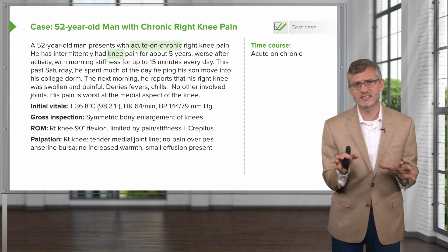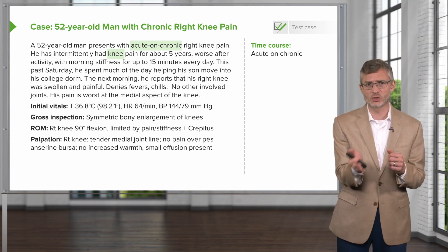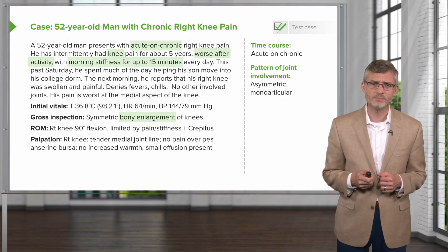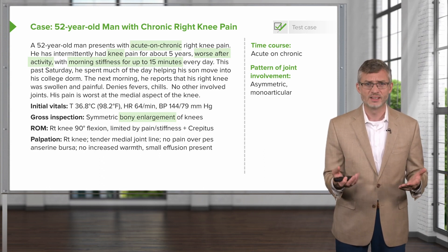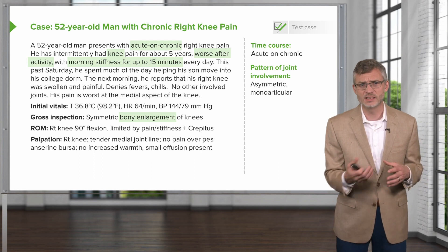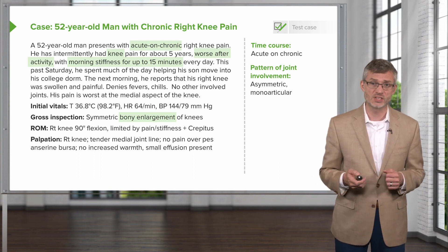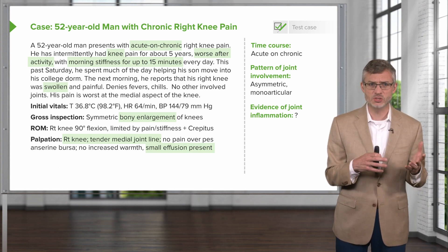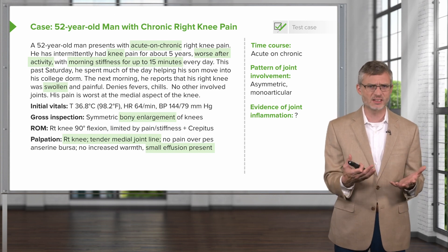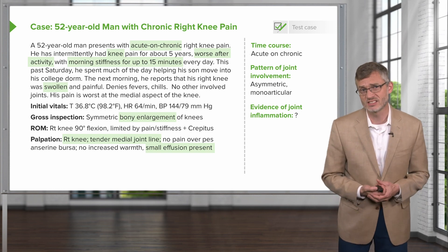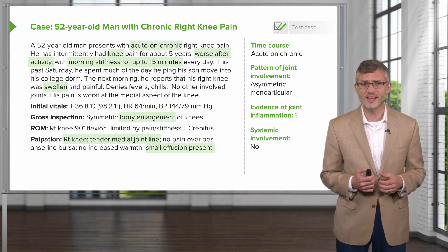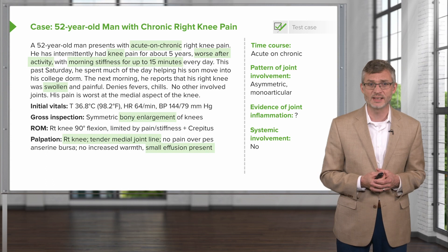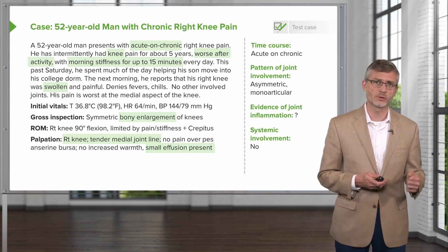Let's highlight some important features of this case. It sounds like this is an acute on chronic issue — he's had pain for five years, but something seems to have made it worse over the past day or so. The pattern of joint involvement is also important: it's asymmetric, mostly involving just one knee, and of course it's monoarticular. In terms of joint inflammation, we have swelling and a painful joint, so we'll probably end up needing an arthrocentesis to see how inflamed this joint really is. And regarding systemic involvement, the review of systems is completely unrevealing — no fevers, no evidence of any other systemic illness.